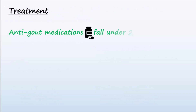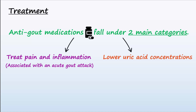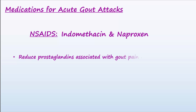Anti-gout medications fall under two main categories: those used to treat the pain and inflammation associated with an acute gout attack, and those used to lower uric acid concentration in the blood to help prevent a gout attack. NSAIDs are the first-line therapy for most patients with gout. The NSAIDs indomethacin and naproxen are commonly used, and act to reduce prostaglandins associated with pain and inflammation.